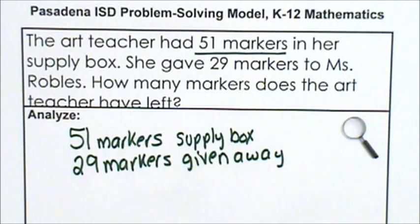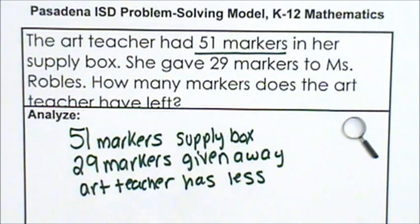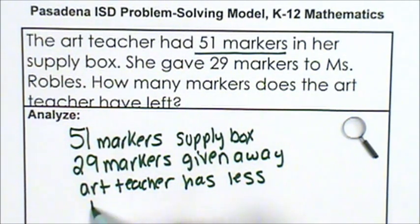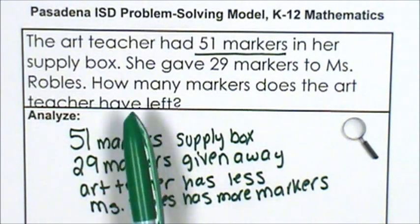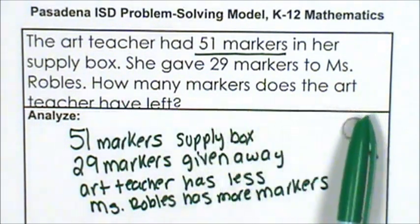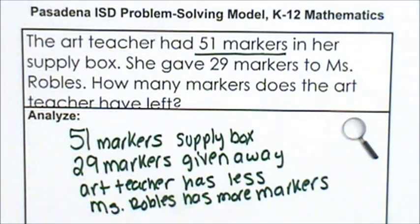That means the art teacher has fewer markers. And if she gave them to Ms. Robles, that means Ms. Robles had more markers than when she started. What is the problem asking me to determine? Let me read the question again: How many markers does the art teacher have left?